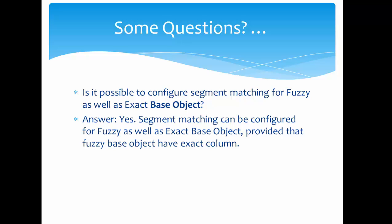Now, if you created person name as a fuzzy match key and you added some other columns such as SSN as exact, or any other exact column like driver's license — in that case, SSN and driver's license, either of those can be configured for segment matching. Or if you configure party type as an exact column, then party type can be configured as a segment matching column.